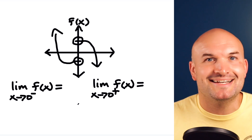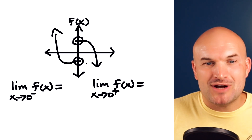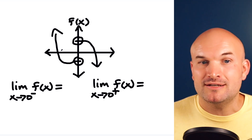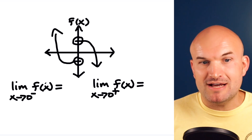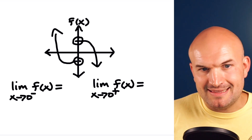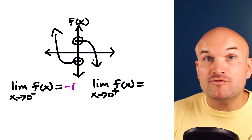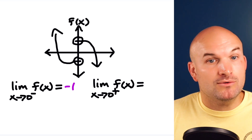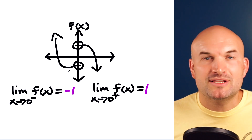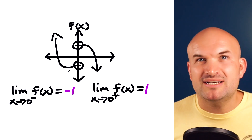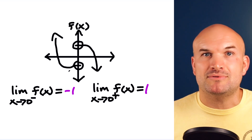In the last example, just to make sure you understand: we're trying to find the value the graph is approaching from the left and from the right. As x approaches zero from the left of f of x, we follow it from the left and see it's approaching the y value of negative one. And as x is approaching zero from the right, we're approaching the y value of one.